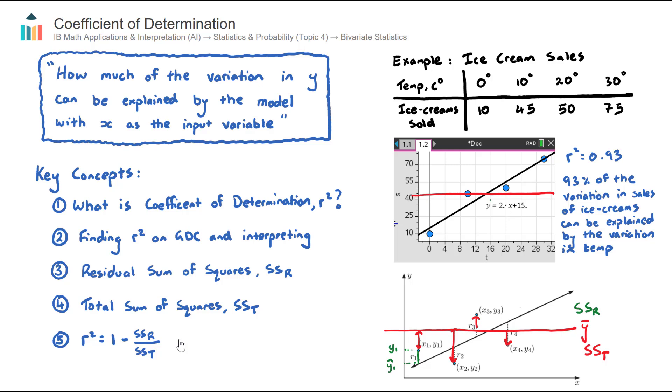But in exam questions, it's unlikely you'll be asked to find the R squared value by hand. Pretty much all the time you'll be able to use your calculator to find the R squared value. But it's important to remember or to understand and to intuitively understand these concepts here, because some questions may ask to calculate the SSR or compare it against the SST.